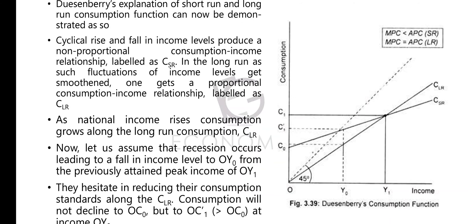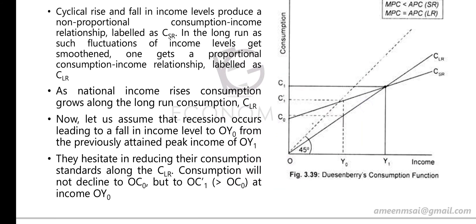In the long-run, as fluctuations in income levels get smoothened, one gets a proportional consumption-income relationship. This is labeled as CLR — the long-run consumption function. As national income rises, consumption grows along the long-run curve CLR.